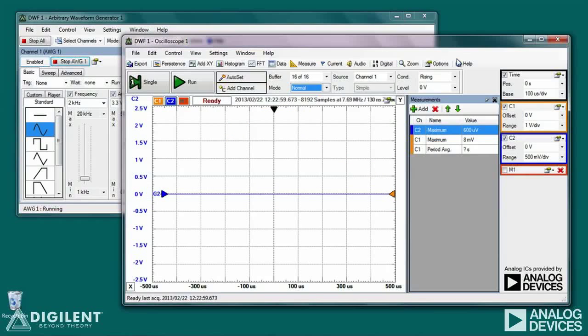I'm going to apply a 2 kilohertz sinusoidal signal with an amplitude of 3.3 volts as my input. On my oscilloscope, I'll use a time base of 100 microseconds per division, and a vertical scale of 1 volt per division on channel 1 and 500 millivolts per division on channel 2. I'll click run to start acquiring data.